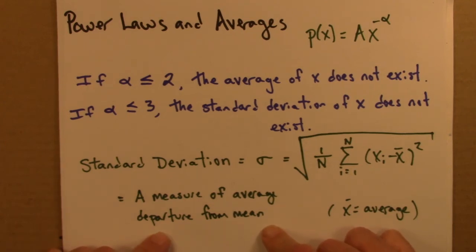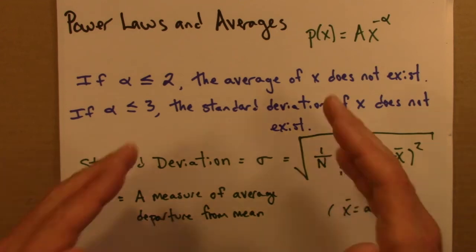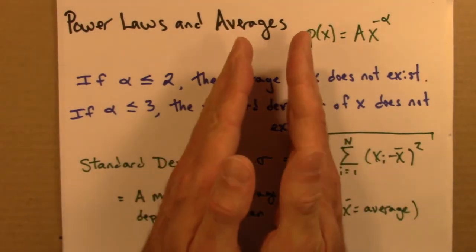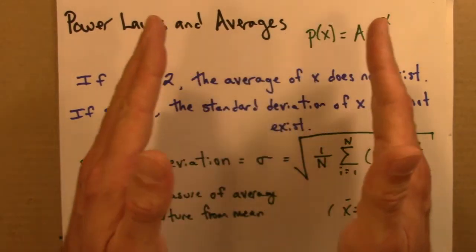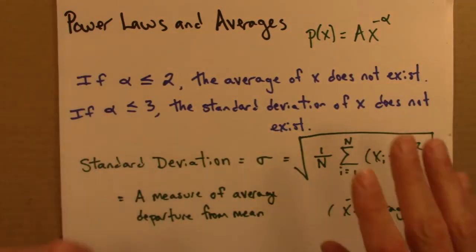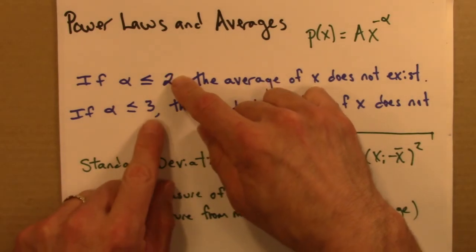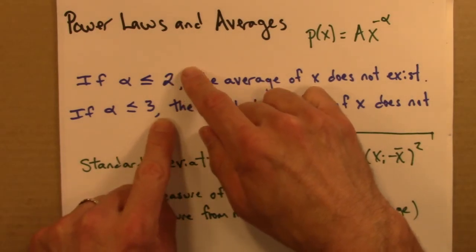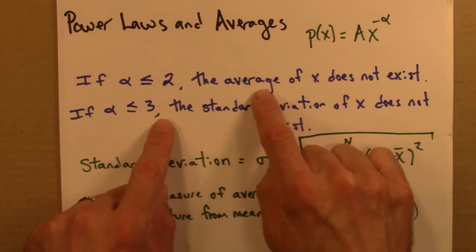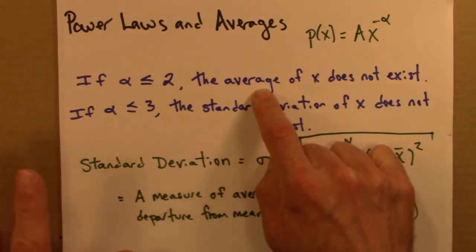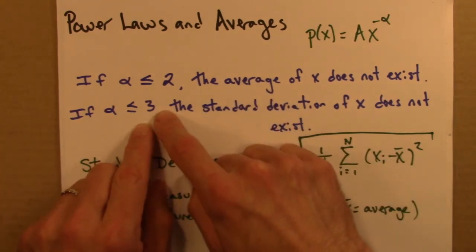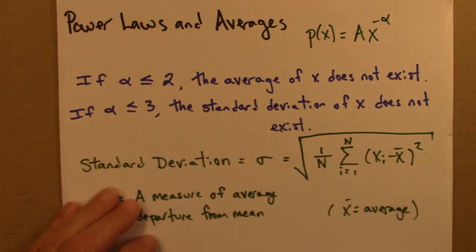And the main way to think about it is it's a measure of the average departure from the mean. If something has a very small standard deviation, all the values are closely clustered, closely packed around the mean. But if we have a large standard deviation, then they're spread out. And what's interesting, I think, is that for alphas between 2 and 3, which turn out to be pretty common, we can have a well-defined average, so things look sort of normal, but the standard deviation in this case goes infinite.